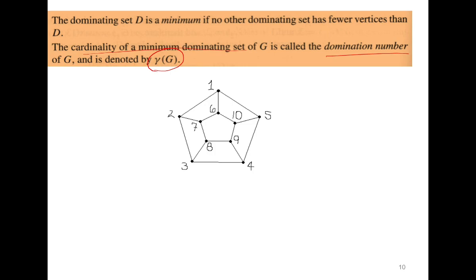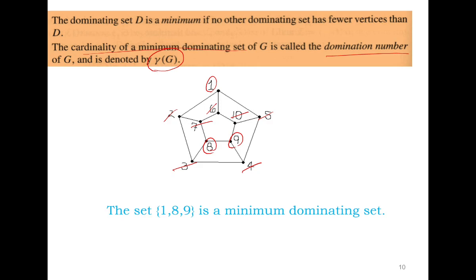Try to compute the domination number for this graph. If you choose vertices {1, 8, 9}: vertex 2 is a neighbor of 1, vertex 6 is a neighbor of 1, vertex 5 is a neighbor of 1, vertex 10 is a neighbor of 9, vertex 7 is a neighbor of 8, and vertices 3 and 4 are neighbors of 8 and 9 respectively. Therefore {1, 8, 9} is a minimum dominating set — you cannot find a dominating set of size two — so γ(G) = 3.